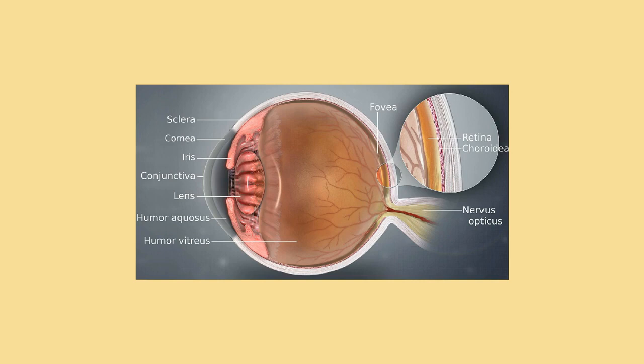The aqueous humor is a clear watery fluid that is contained in two areas: the anterior chamber between the cornea and the iris, and the posterior chamber between the iris and the lens. The lens is suspended to the ciliary body by the suspensory ligament (zonule of Zinn), made up of hundreds of fine transparent fibers which transmit muscular forces to change the shape of the lens for accommodation (focusing).